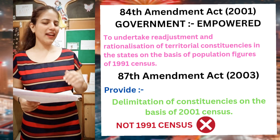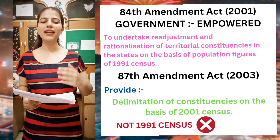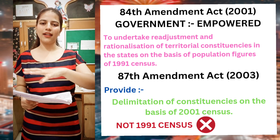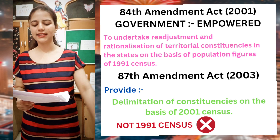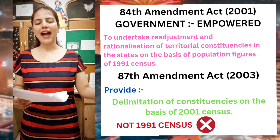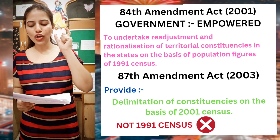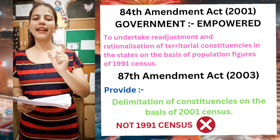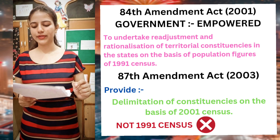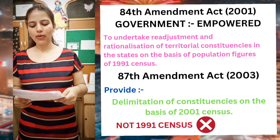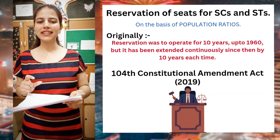Later on, in 2003, the 87th Amendment Act came, which provided for the delimitation of constituencies on the basis of the 2001 census, not the 1991 census. So after the 87th Amendment Act, it was not 1991 but 2001 census figures that would be used to allot the number of seats to any particular state.